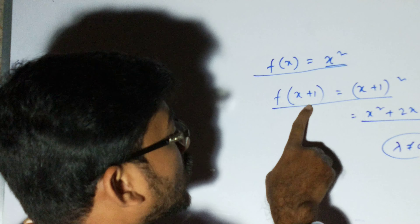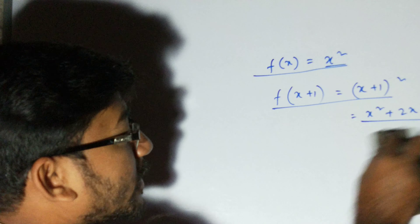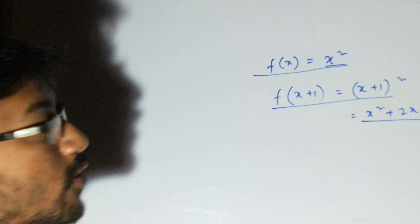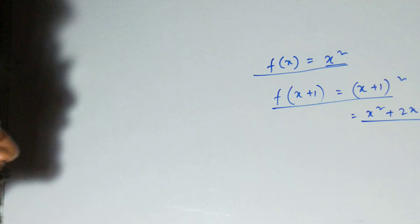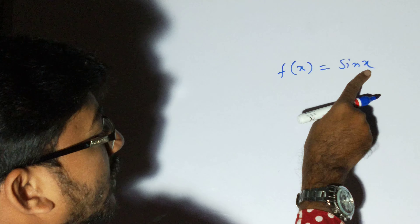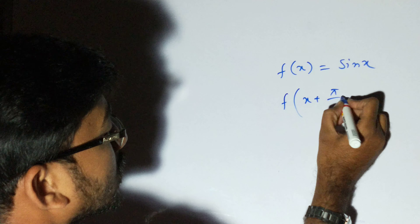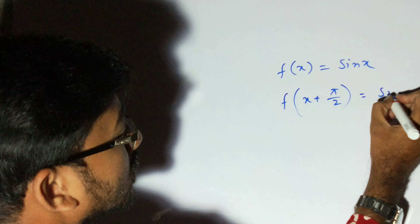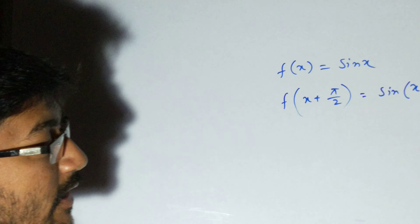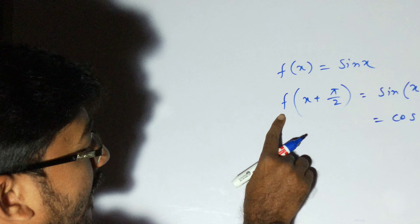If lambda equals 0, all functions would be periodic and the definition would collapse. Now let us take a different example: f(x) = sin x. Here the variable x is an angle. If we add π/2, we get sin(x + π/2), which equals cos x. So f(x + π/2) = cos x, which is not equal to sin x. So adding π/2 does not make sin x repeat.